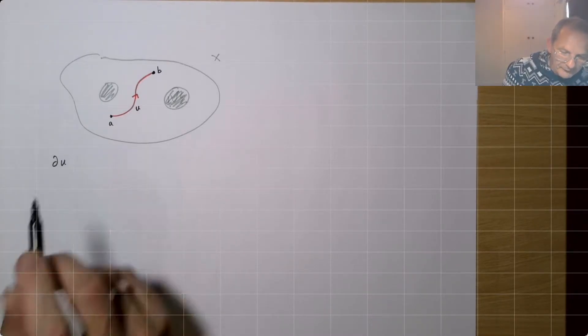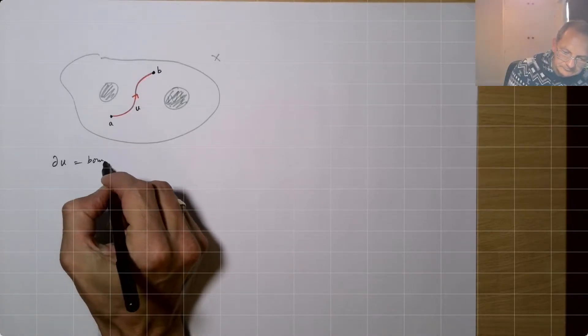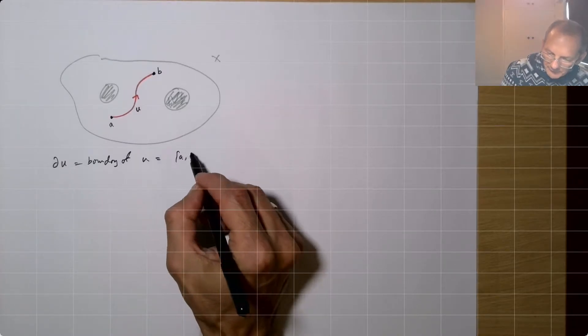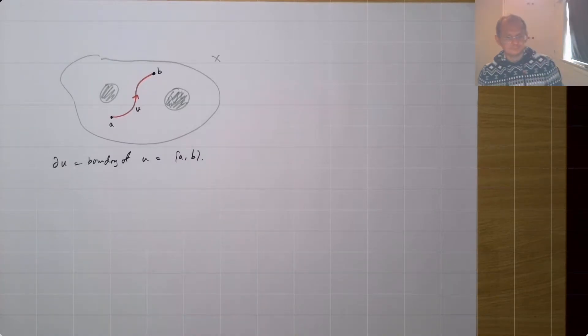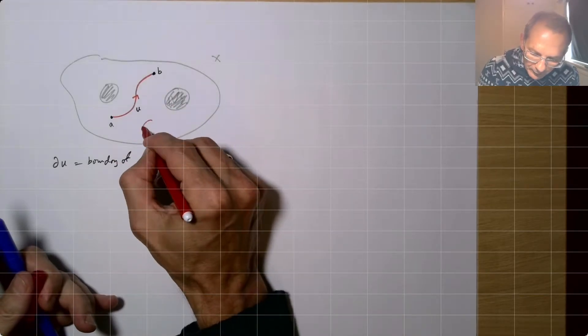So I'm going to write this curly D, curly DU is the boundary of U. So it consists of these points A and B. So there's a path of the boundary. We can alternatively look at a path like this, a closed path here.